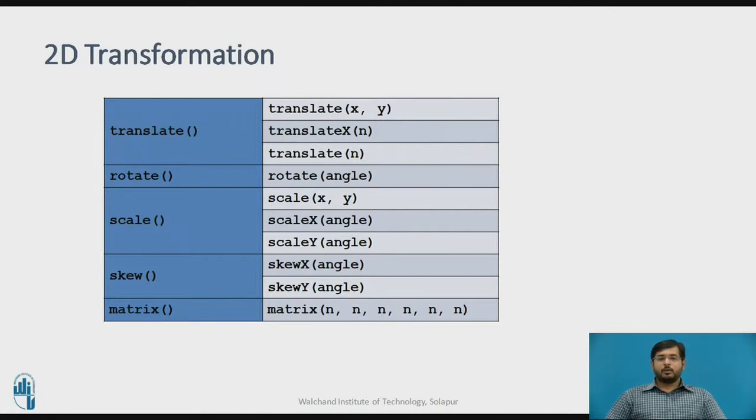Second property is rotate. Rotate has, you have to pass a number with a degree. How much degree you want to change the angle of an element. After that, scale. Scale is similar to translate. It has a scale function which takes two parameters, x and y. Similarly, with a single parameter, you can scale x and you can scale y.